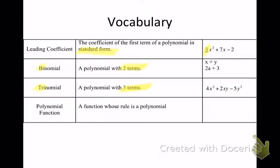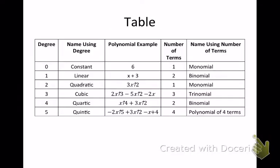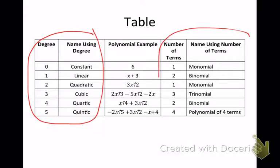A polynomial function is a function whose rule is a polynomial. Here's what we're looking at today — this is going to help you with classifying them. Zero is a constant. If you have no degree, that's like saying x to the zero power. If I have x to the zero power, that's what gives me a constant.